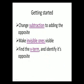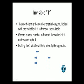Let's also review the invisible 1. The coefficient is the number that's being multiplied with the variable. It's usually in front of the variable. If you do not see a number there, it is understood to be 1. And if you make the 1 visible, it will help you identify its opposite.